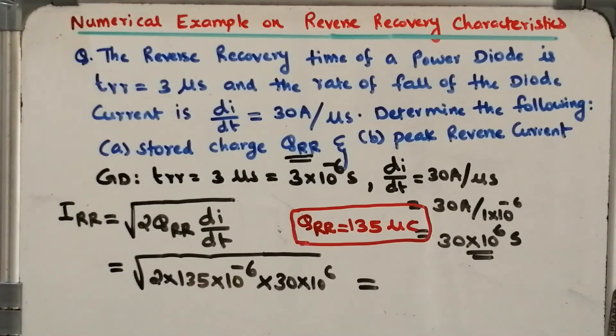After substituting, I will be getting IRR equal to 90 ampere. So the answer, the reverse recovery current, is equal to 90 ampere.